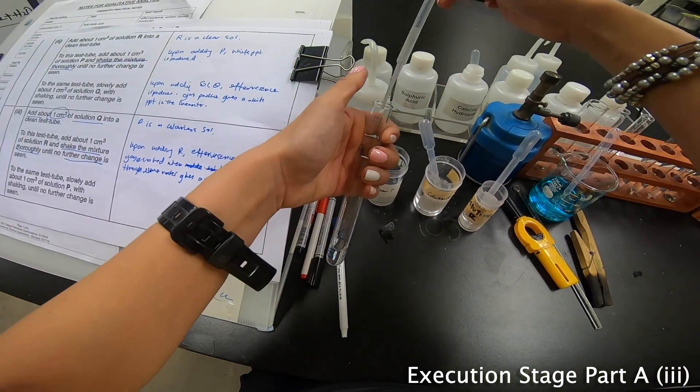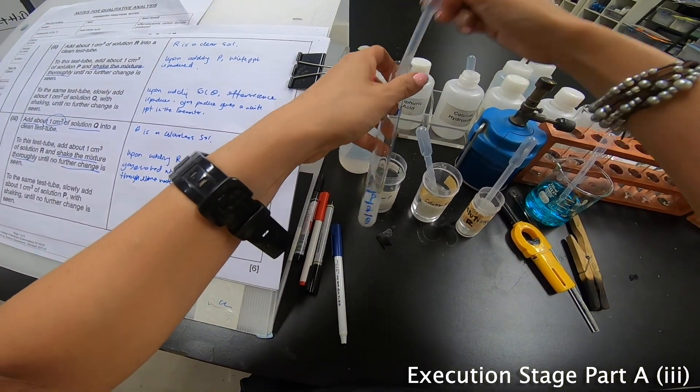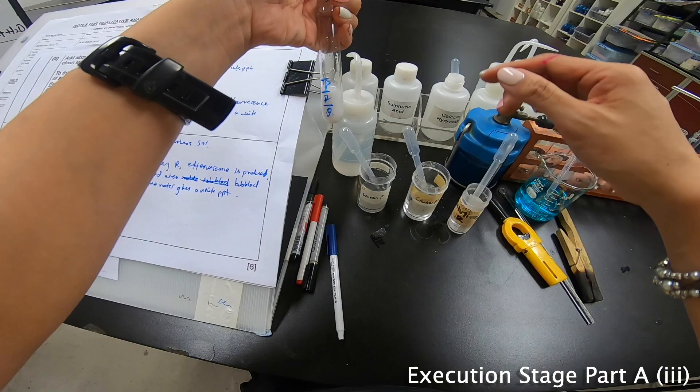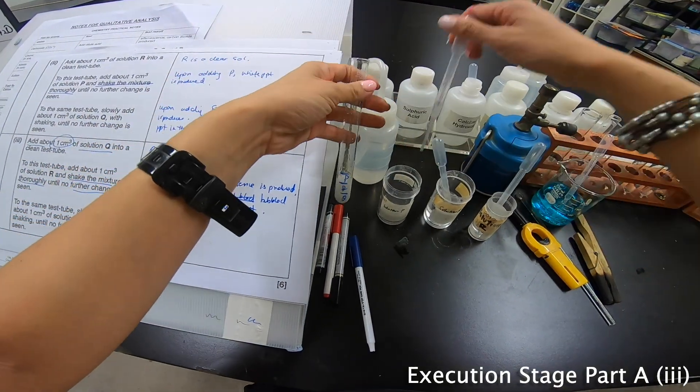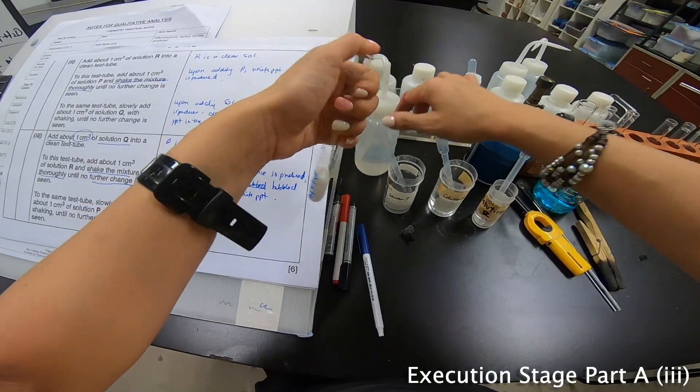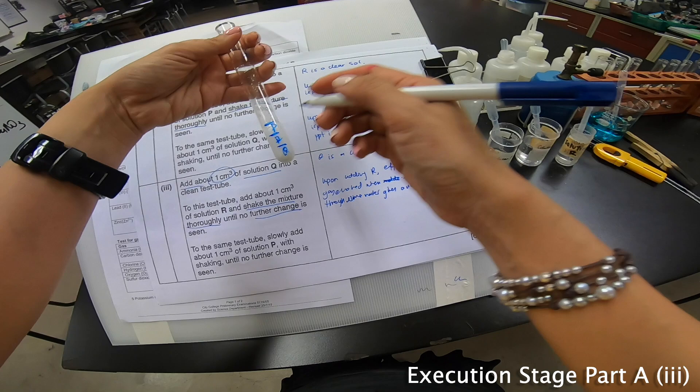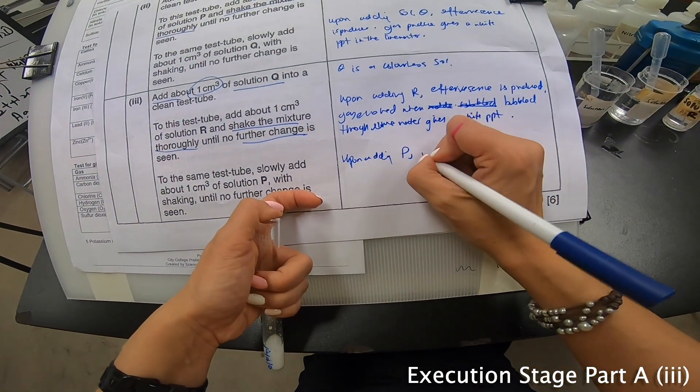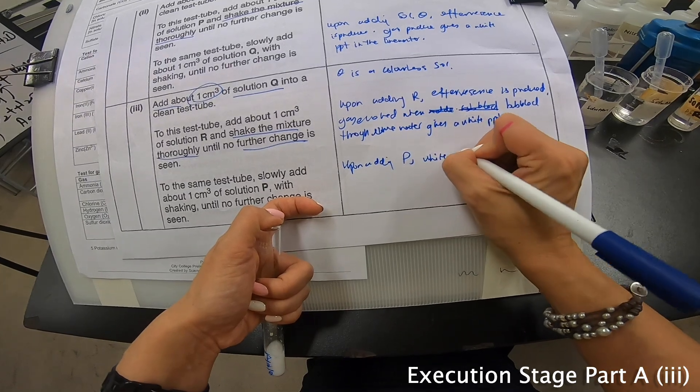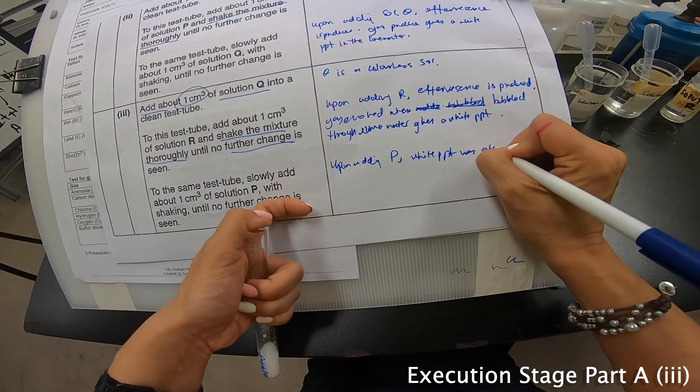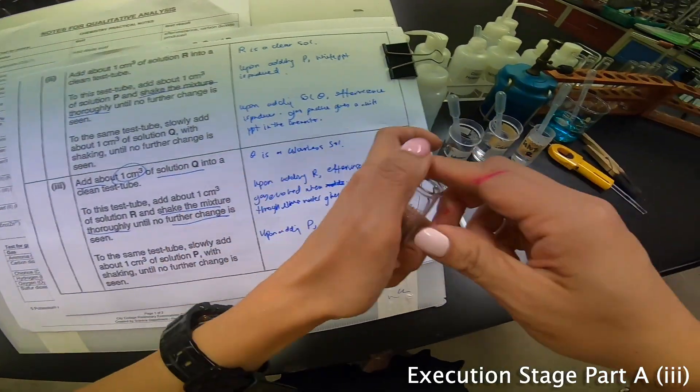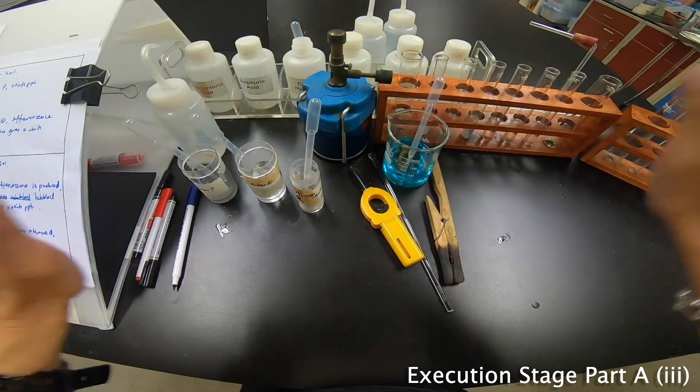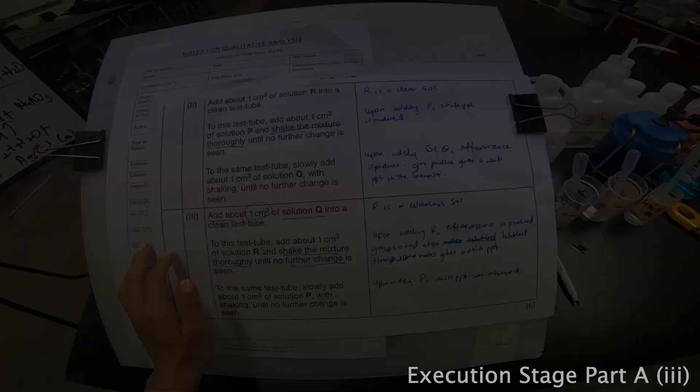Now, right now, let's add P. I can clearly see white precipitate for me. Let me add two. One. Slowly add and then white precipitate is seen upon adding P. White PPT was observed. Let's put this back. So, we have complete the first part already.